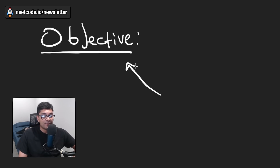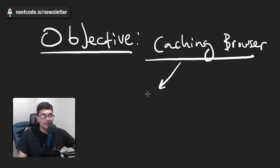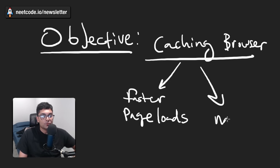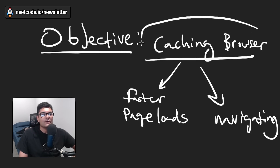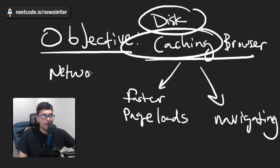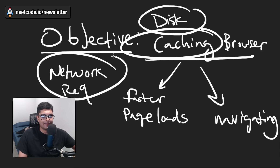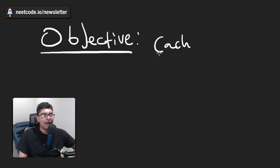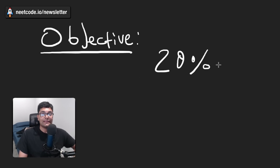Notion's objective here was to implement caching in the browser. This would result in faster page loads as well as navigating between pages. Why exactly is that? Well, the alternative to reading from the local cache — which by the way is a disk-based cache — it's generally faster to read from disk than it is to make a network request, which is what would happen if we were reading from Notion's backend for every single page. And so Notion was successful in doing this. They did reduce latency by about 20%. And here's how they did it.